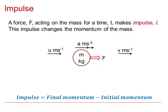So here we have a force F acting on a mass for time T to create an impulse I, and the impulse is changing the momentum of the mass. If we apply some Newtonian methods — Newton's second law to the right on this object — we get force F to the right equals mass M times acceleration. Rearranging for A gives A equals F over M, equation 1. And now if we choose a suitable SUVAT method,